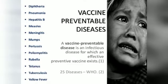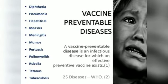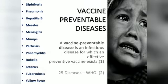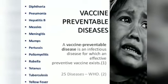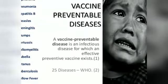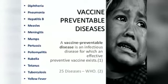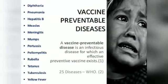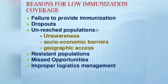Immunization protects against many serious childhood diseases, including whooping cough, measles, rubella (German measles), meningococcal type C infection, pneumococcal disease, chickenpox, tetanus, mumps, polio, diphtheria, rotavirus, and hepatitis. These diseases can cause hospitalization and serious ongoing health conditions, including cancer, brain damage, and deafness. High immunization rates in the community have made many of these diseases rare, however they still exist, and the risk of complications from these diseases is far greater than the very small risk of side effects from vaccination.